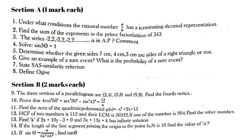Find the zeros of the quadratic polynomial P(x) = x² + 2x + 15. Then the HCF of two numbers is 113 and the LCM is 56952; if one of the numbers is 904, find the other number. Find K if 2x + 10y − 3 = 0 and 3x + 15y = K has infinite solutions. The length of the line segment joining the origin to the point (a, 8) is 10 — find the value of a. If sin θ = a / √(a² + b²), find tan θ.